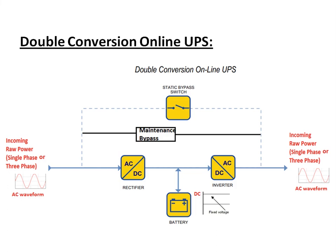In addition, the double conversion UPS has a static bypass switch. In case of any problem with the rectifier, inverter, or UPS circuit, the UPS detects this and connects the load directly to the input through the static bypass switch. It also has a maintenance bypass so that in case of any maintenance or repair, without disturbing the load, the maintenance person can transfer to the maintenance bypass and safely work on the UPS system.